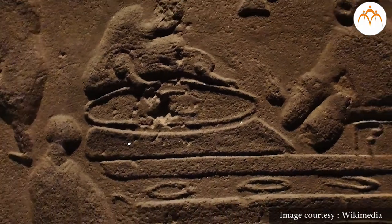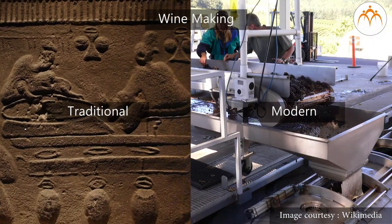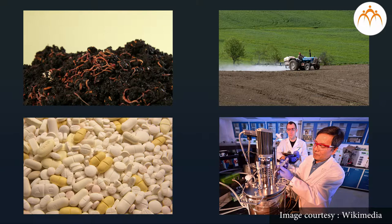In the previous session, we have studied the basic concept of biotechnology. We have also made an attempt to understand how the principles and processes of biotechnology have changed over a period of time from its traditional to modern form. We concluded with a small overview of various areas of life and industry that have been impacted by modern biotechnology.